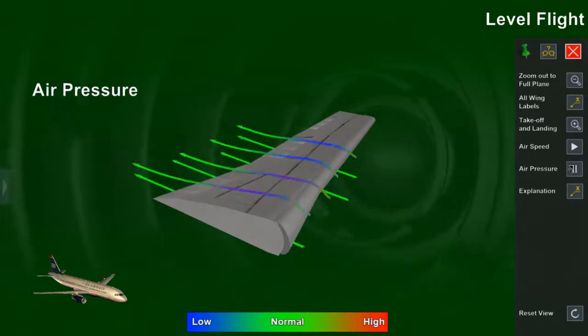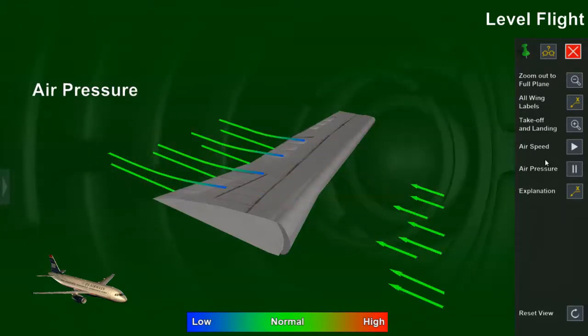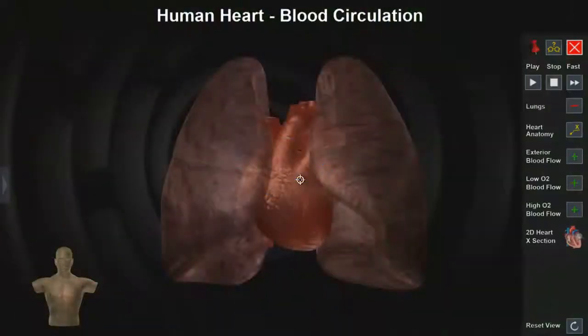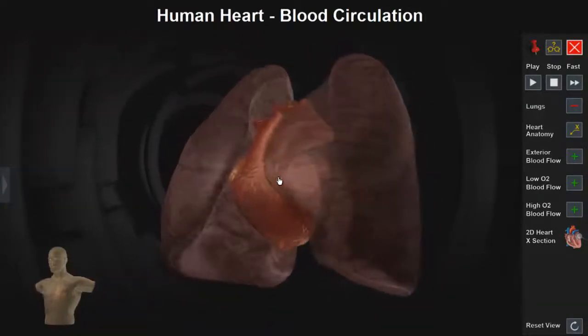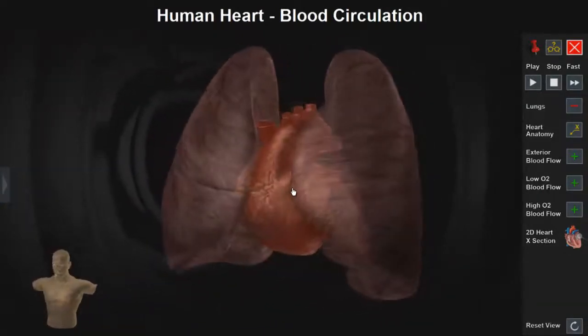When lessons are shown in stereo 3D, the entire experience is even more immersive and engaging. In this model, we see the human heart and lungs. Note that the small torso image at the bottom of the screen tracks the orientation of the heart and lungs.